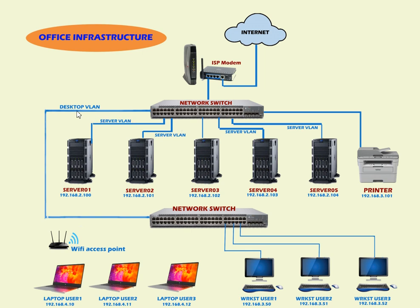One VLAN is the server VLAN and one is the desktop VLAN. In the server VLAN we have five servers — Server 1 through Server 5 — with IP addresses in the 192.168.2.x range (e.g., 102 to 104). A network printer is also connected in the desktop VLAN at 192.168.3.101.